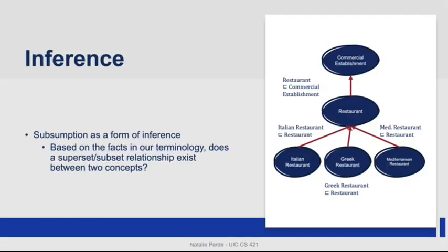Once we have a hierarchical structure in place, either through explicitly defined relations or through subsumption, we can perform inference to assess the validity of new inputs. Subsumption itself can be used as a form of inference. Given the facts available in our terminology, we can determine whether a superset-subset relationship exists between two given concepts. For example, if we have a restaurant Giordano's and we know it's an Italian restaurant but have never been told it's a restaurant in general, we can infer that it is, in fact, a restaurant, since Italian restaurant is subsumed by restaurant.